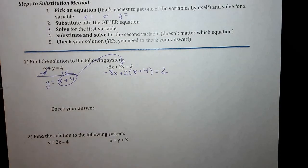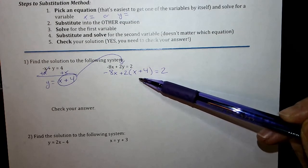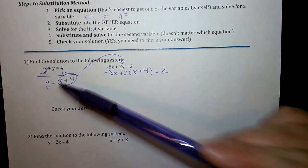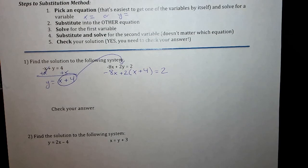And now step 3, solve for the first variable. In this case, I'm going to be solving for x. But if I had made this one x equals and I plugged in for x, I'd be left with my y's and I'd be solving for y. I'll show you that one on the next, on number 2. But with this equation, now step 3, I'm going to solve for the first variable x.